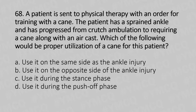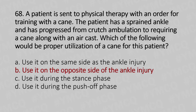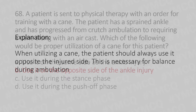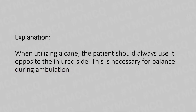And the answer is Option B: use it on the opposite side of the ankle injury. Explanation: When utilizing a cane, the patient should always use it on the opposite side of the injured limb. This is necessary for balance during ambulation.